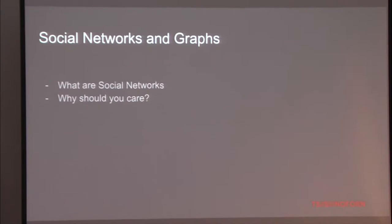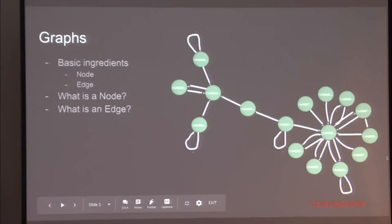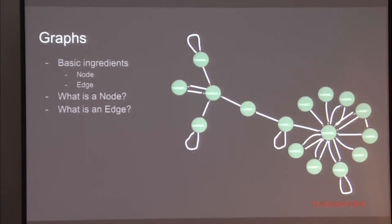They give you important contextual information about the participants - what their interests are or what they're doing. This is the year of Linux on the laptop, by the way - 2019, mark my words. For those who aren't into graphs, this is what they look like. You have nodes and edges. The nodes are a thing, a place, a characteristic, an attribute. The edge is how it associates with other nodes. They don't have to be ordered or structured in any particular way, other than making sure your node-edge relationship makes sense.